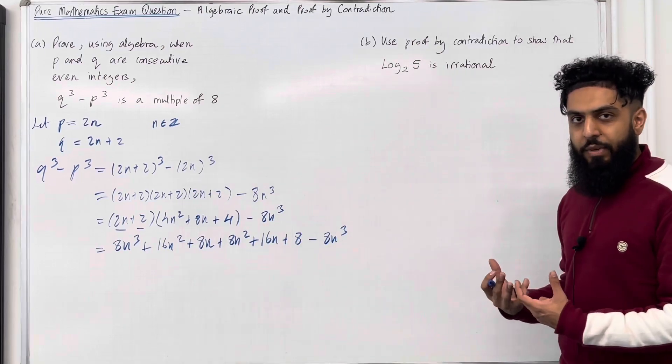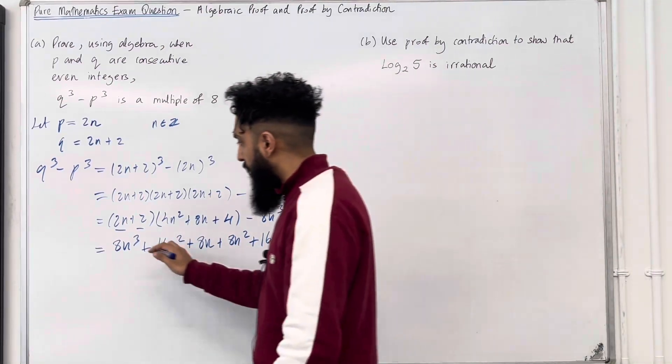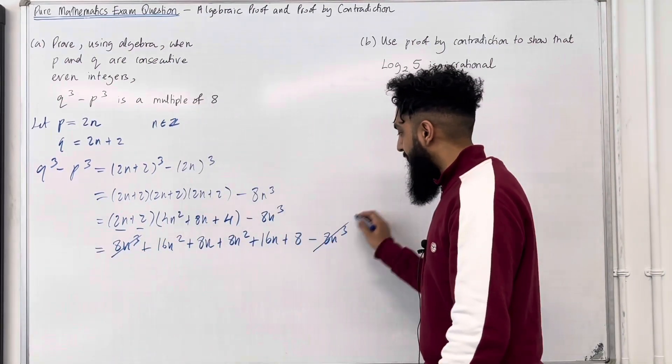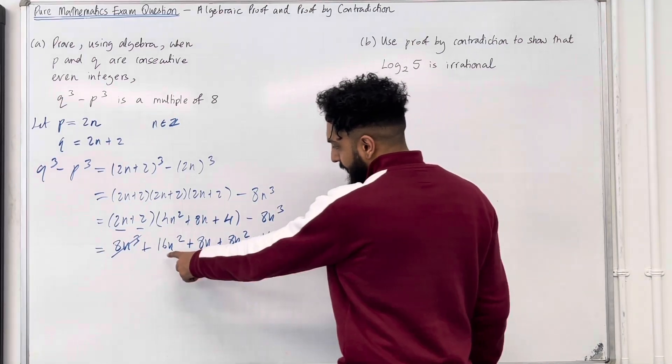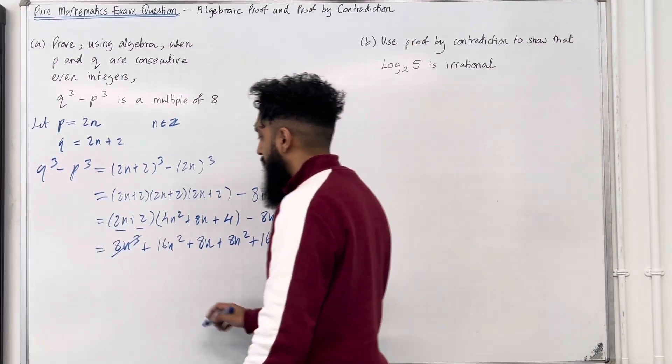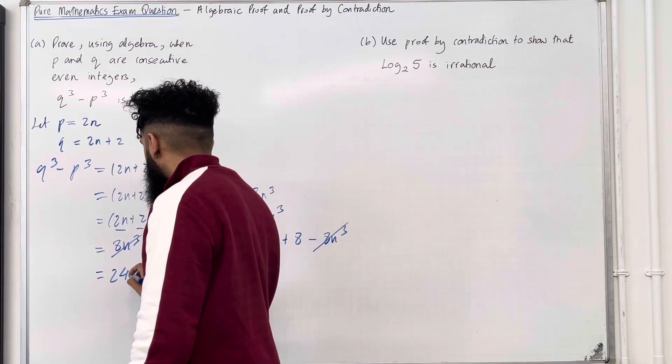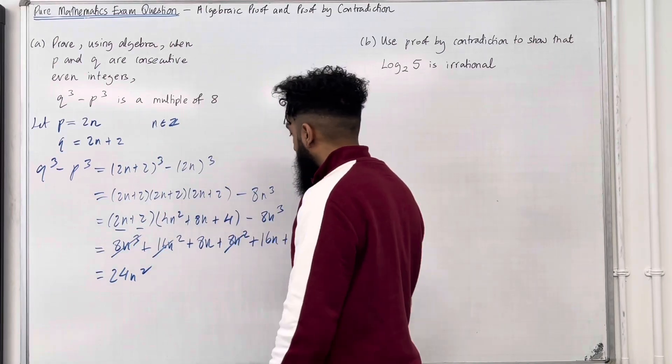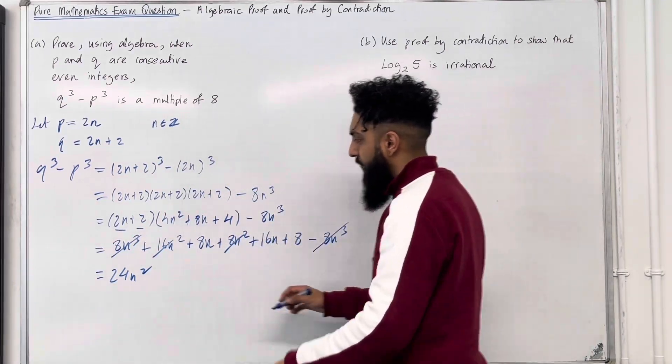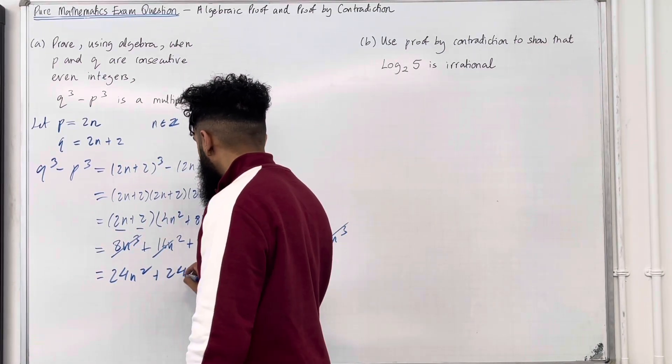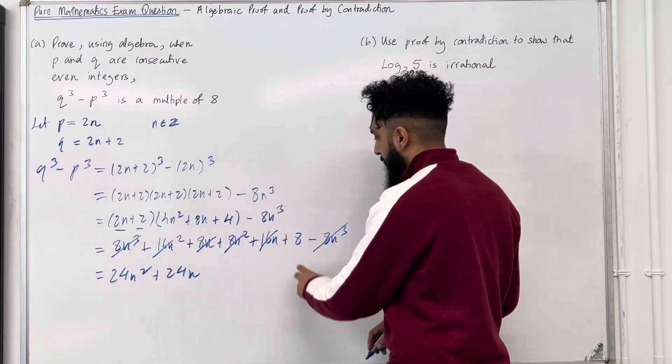We're going to simplify this expression. So 8N cubed will cancel with the minus 8N cubed. 16N squared plus 8N squared is 24N squared. 8N plus 16N is 24N plus the 8.